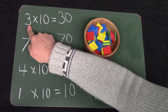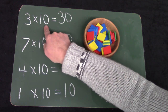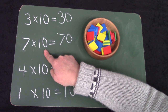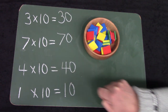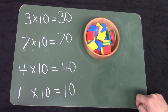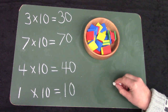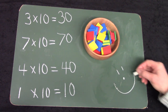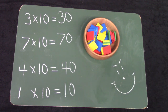If there are three groups of ten, you would count by ten three times: ten, twenty, thirty. If you have seven groups of ten, you would say ten, twenty, thirty, forty, fifty, sixty, seventy. Class, I hope that you have a wonderful day and that you have fun playing with math today. Bye bye!